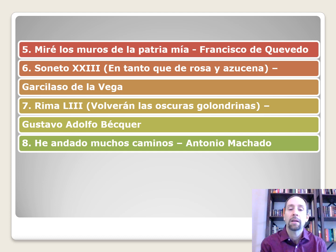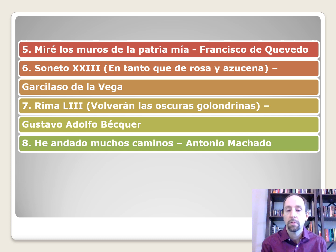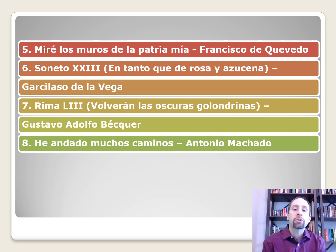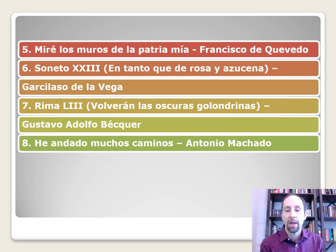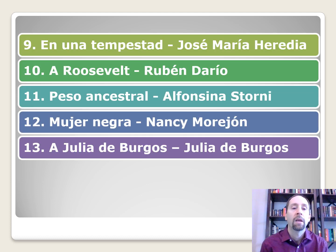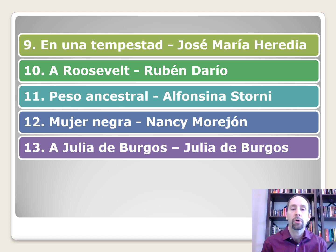Rima cincuenta y tres, Volverán las oscuras golondrinas by Gustavo Adolfo Bécquer. He writes in the Romanticismo period, and the golondrinas — swallows, a type of bird — connect to the Romantic theme of nature. He andado muchos caminos by Antonio Machado — I see the initials A and M to make that connection. En una tempestad by José María Heredia — 'Joseph Mary Heredia' in translation, so I think of someone praying to Joseph and Mary for protection in the storm.